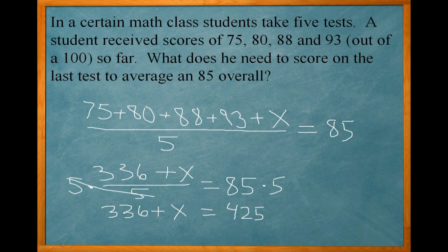Now from here to get X by itself we need to get rid of this 336. So we subtract 336 from both sides, and that leaves us with X equals 89.